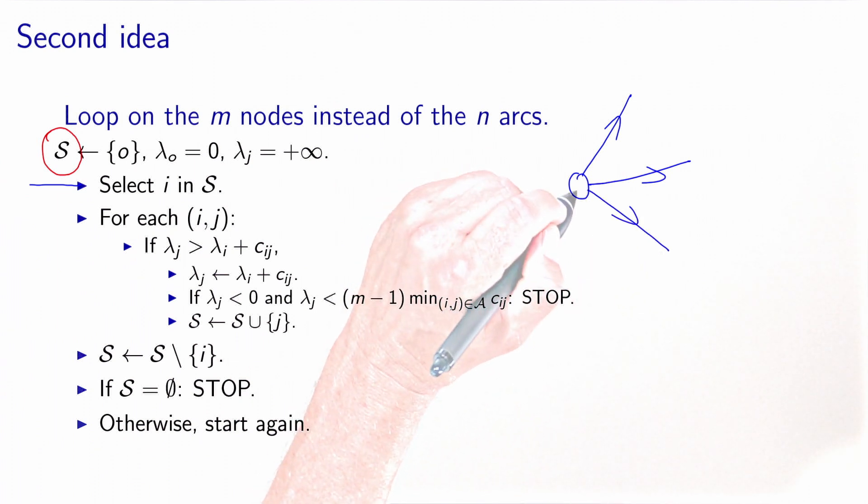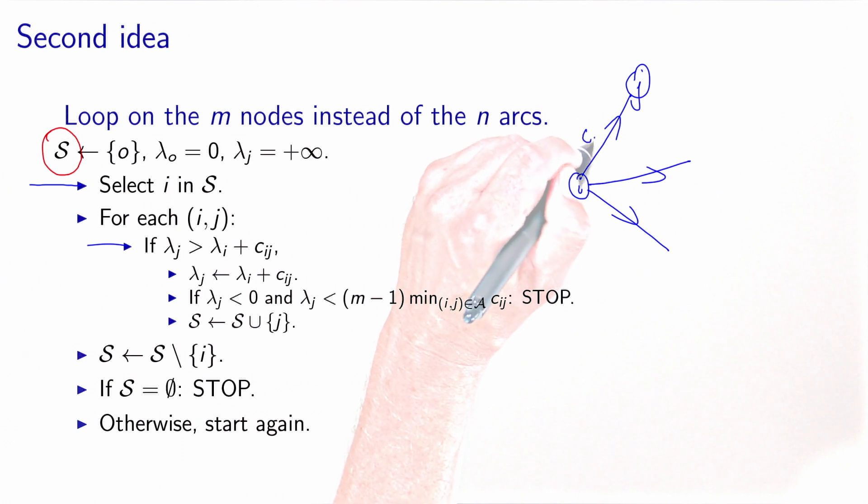And by looking at all the arcs going out of that node. And then we apply the previous idea that we have presented. If the label of node j is strictly greater than the label of node i plus c_ij, then we update the value of the label. Now what we need to do is to verify if the network does not contain a cycle with negative cost.